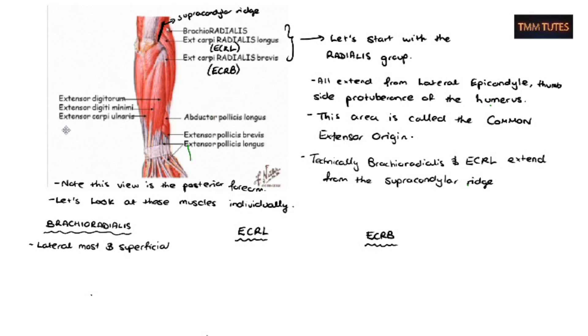So let's start with brachioradialis. It's the lateral most and most superficial. So on dissection, you see it first. It inserts into the radial styloid, which is a little extension of the radius, and it flexes at the wrist. This is actually an exception to all the others, it's an exception to all the other extensors in the posterior compartment of the forearm.